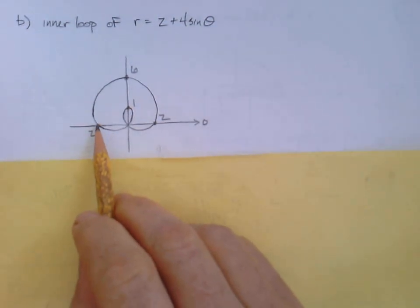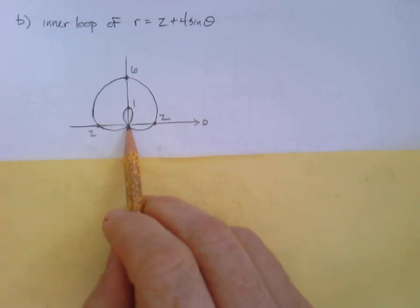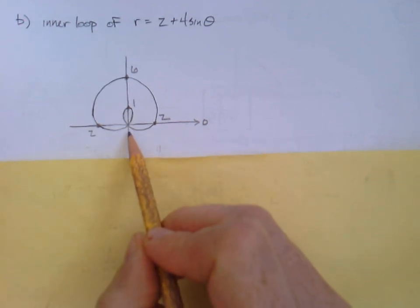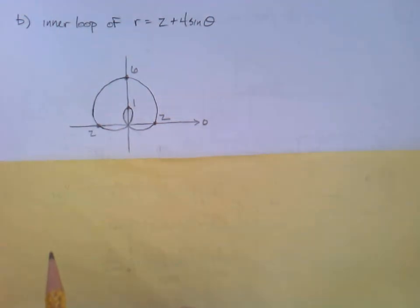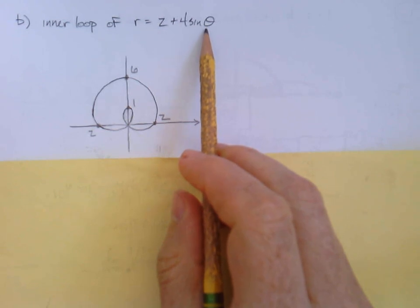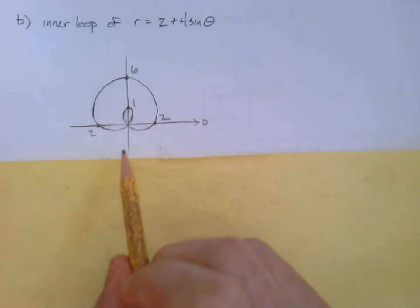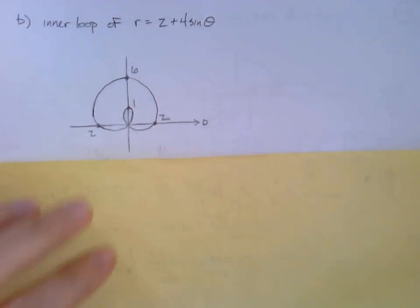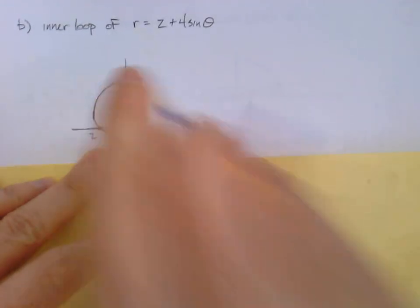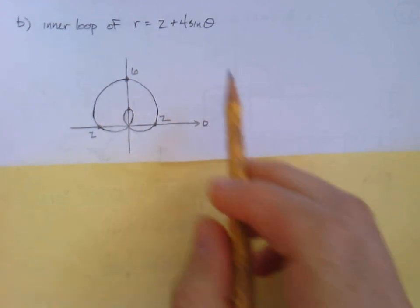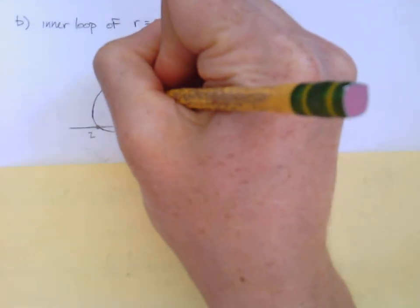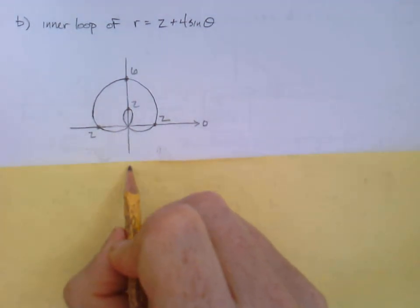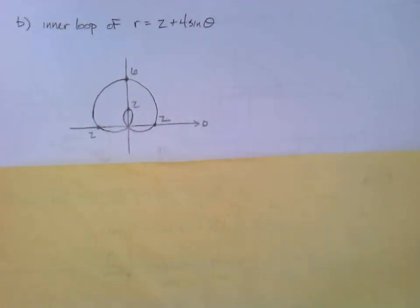But then something interesting happens. The radius begins to shrink. And at some point, the radius is 0, kind of like in our last example. Then, by the time you get to an angle of 3 pi over 2, the radius is actually negative 1. Well, sine 3 pi over 2 is negative 1, so you'd have 2 minus 4. So really, we're looking down this way, but then it's pushing back in.